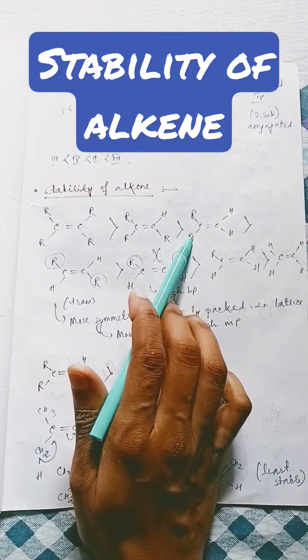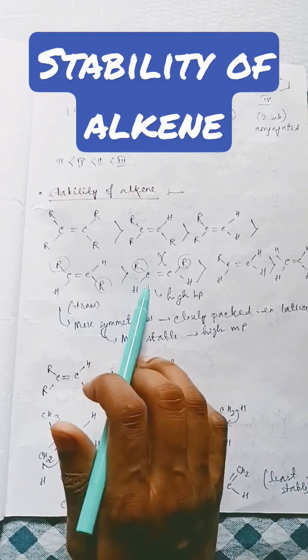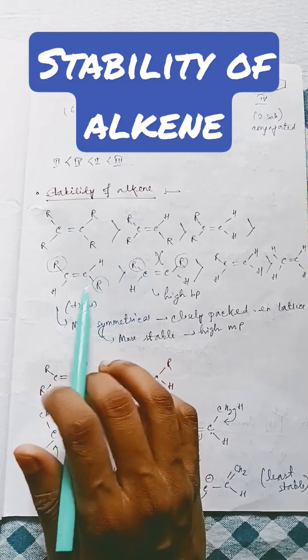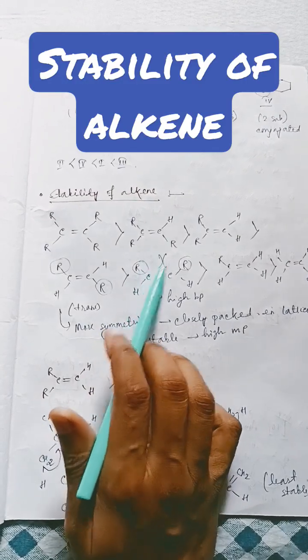But you can see here it is also di-substituted. In the trans form it is also di-substituted. In the cis form it is also di-substituted. Now we know that the trans form is more stable than cis because in cis form there is steric hindrance, steric factor.